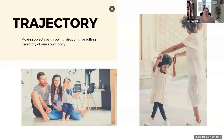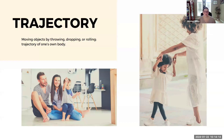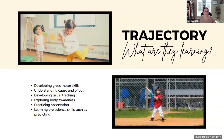The next schema is the trajectory schema — this is when a child has an interest in moving objects. These are the children who really like to throw things, drop things, and roll them, and it might also include an interest in moving their own body. Parents often ask why children throw their toys or drop food from a high chair — and there's a good reason: it's the trajectory schema.